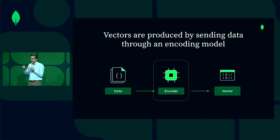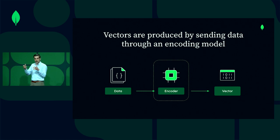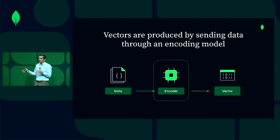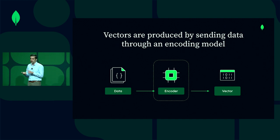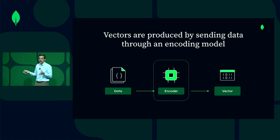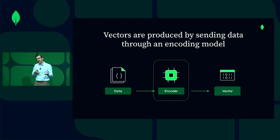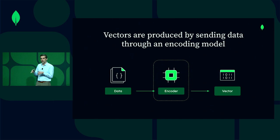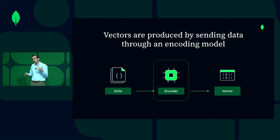That's a very powerful concept — to be able to represent so much inside of just this string of numbers. You're probably asking yourself, how would you get a vector? The way it works is you pass your data — whether it be an image, text, or audio — through an encoder of some sort. These are machine learning models that take this data and transform it into this numeric representation. We'll go deeper into what this means later on.